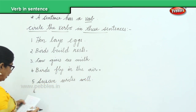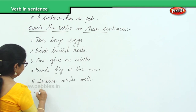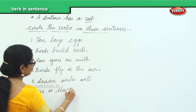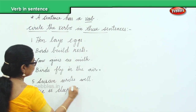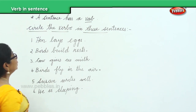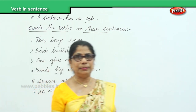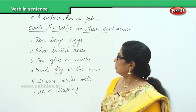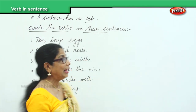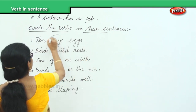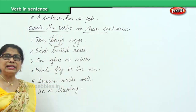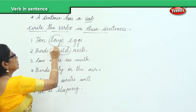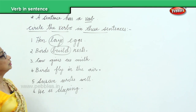And finally you have: hen is sleeping. Now, what are we going to do? Circle the verbs. Hen lays eggs — which is the verb here? Lays. What does the hen do? The hen lays eggs. Birds build nest — the verb is build. Circle the verb.